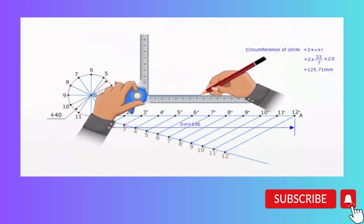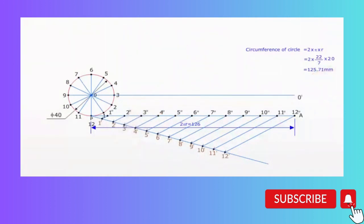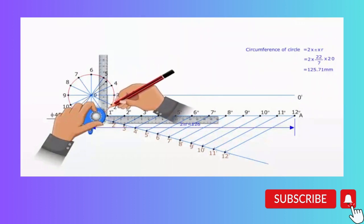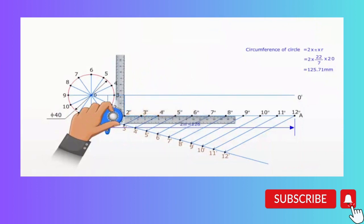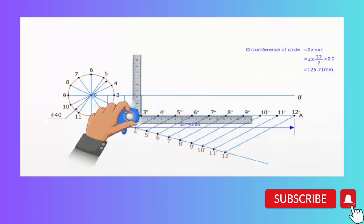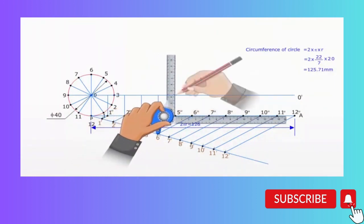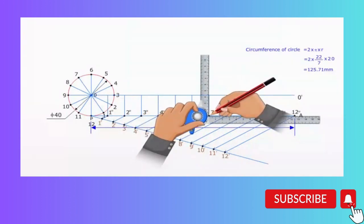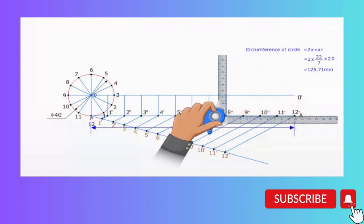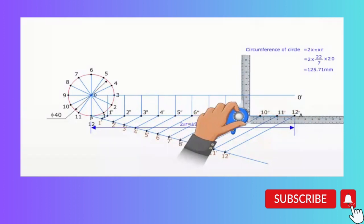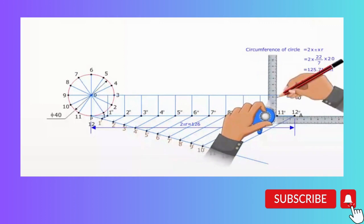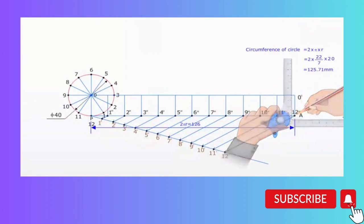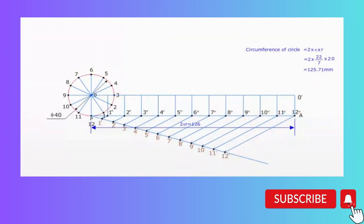Draw the line OO' parallel and equal to PA, which is the locus of the centre of the generating circle. Draw lines from division points 8, 9, 10, 11, 12 to meet the line OO' at O1, O2, O3, O4, O5, O6, O7, O8, O9, O10, O11, O12.